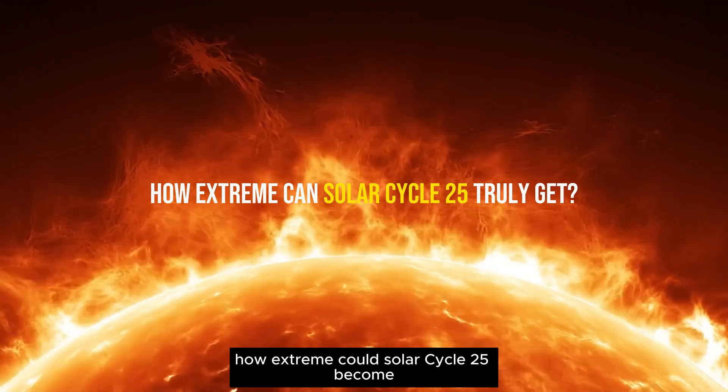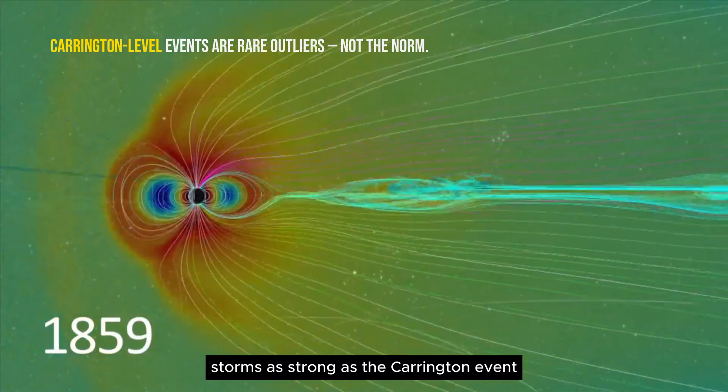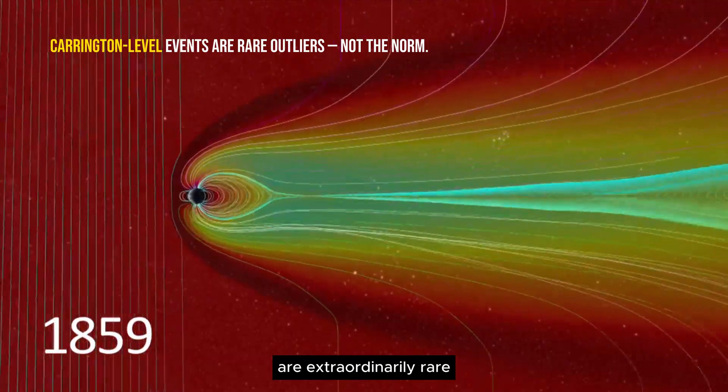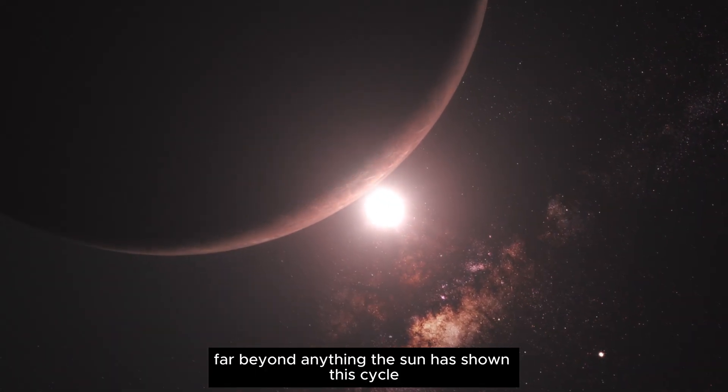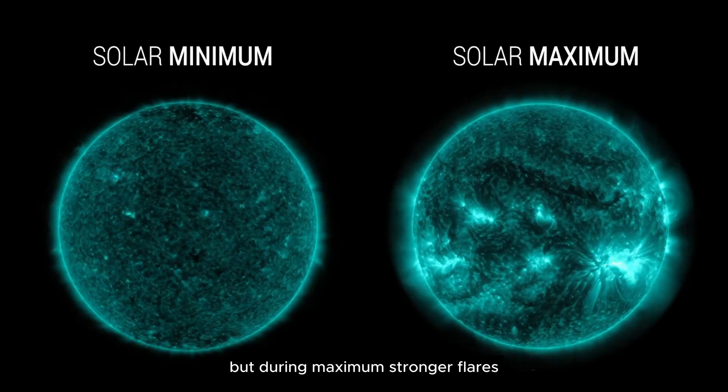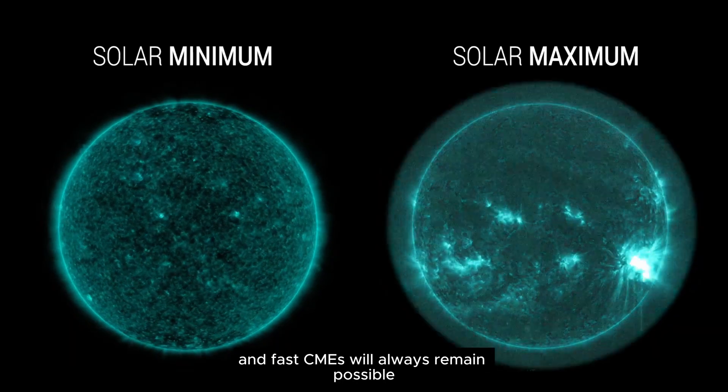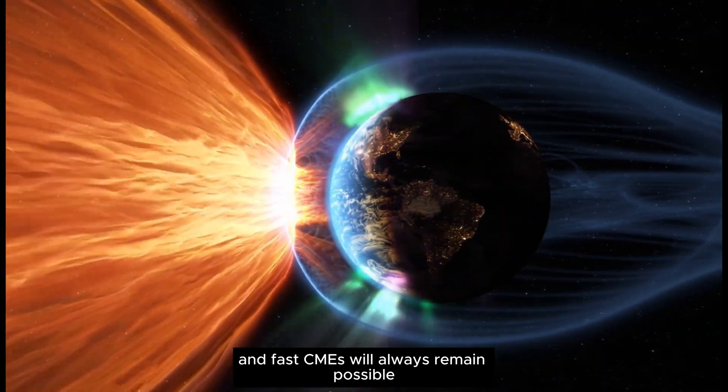How extreme could solar cycle 25 become? Storms as strong as the Carrington event are extraordinarily rare, far beyond anything the sun has shown this cycle. But during maximum, stronger flares and fast CMEs will always remain possible.